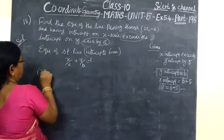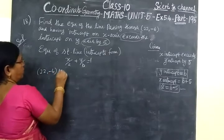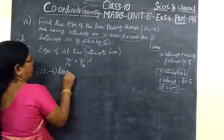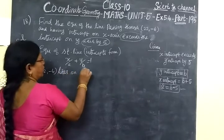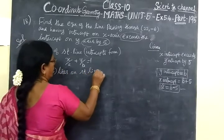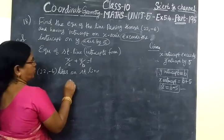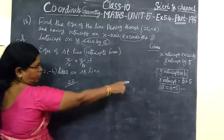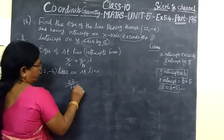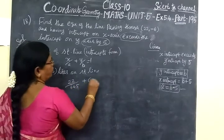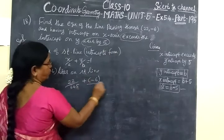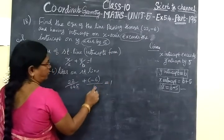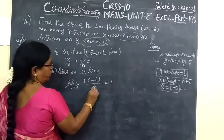The point (22, -6) lies on the given straight line. So we substitute: x-intercept is B plus 5, so x/a becomes 22/(B+5). The y value is -6, so we have 22/(B+5) plus (-6)/B equals 1.